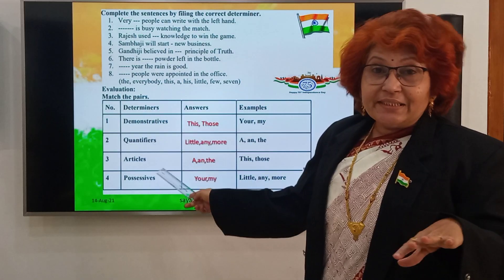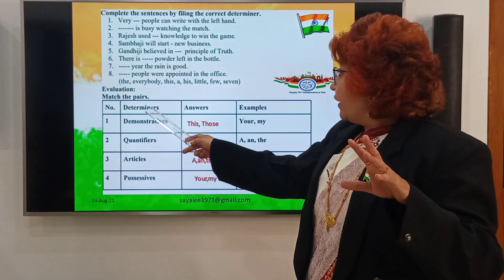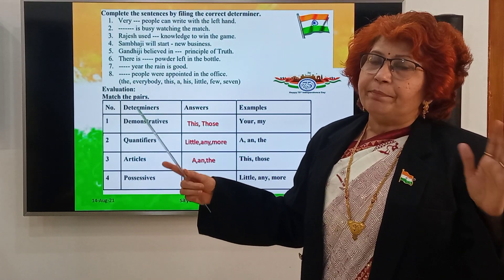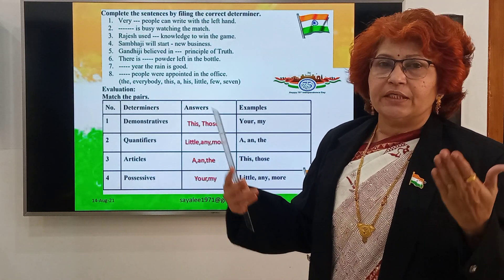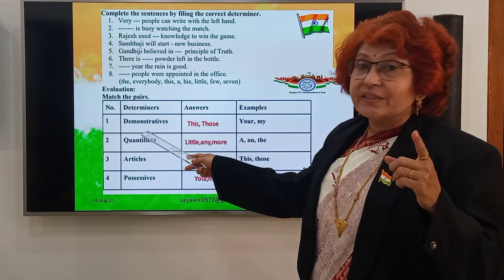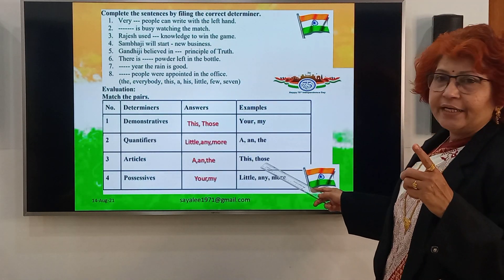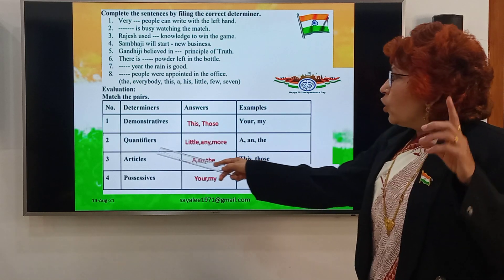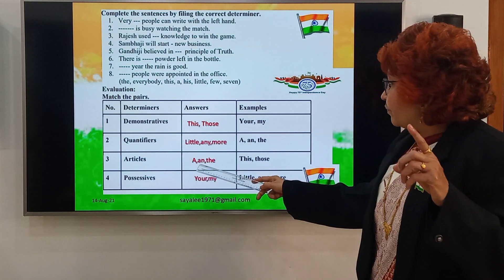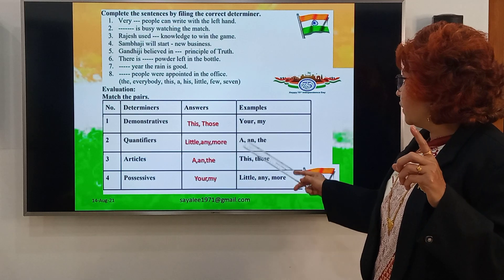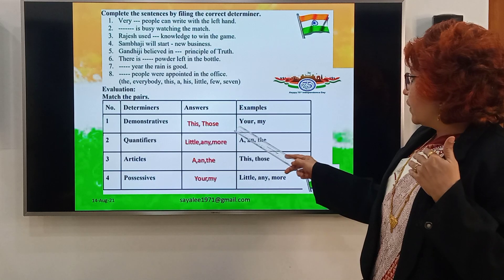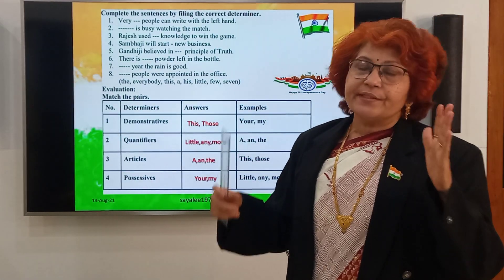Let's match these pairs. Determiners are in the first column and examples are in the last column — the examples are shuffled, so we have to match the correct pairs. Demonstratives: this and those. Quantifiers: little, anymore. Articles: a and the. Possessives: your, my — these are possessive pronouns which are determiners.